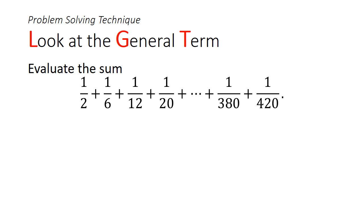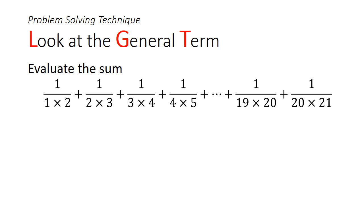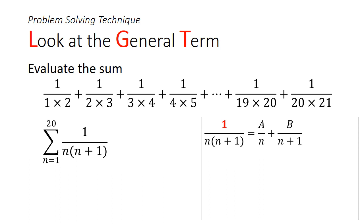What we really want to do is find the general term. Examining each denominator: 2 is 1×2, 6 is 2×3, and the last denominator 420 is 20×21. So this is essentially the summation of 1 over n(n+1) from n=1 to 20. This is where partial fractions kicks in — we express 1 over n(n+1) as the sum of two smaller fractions: a over n plus b over n+1.